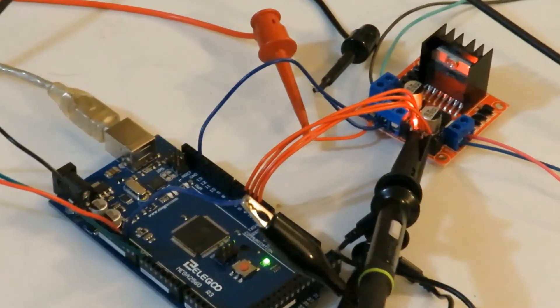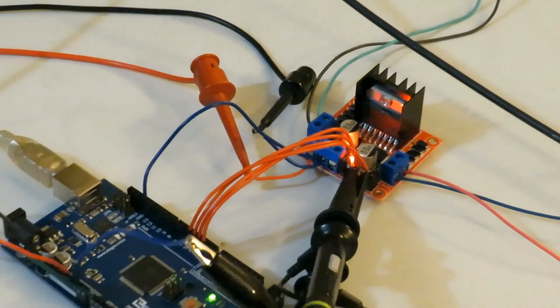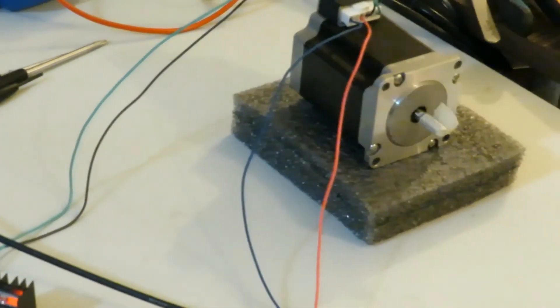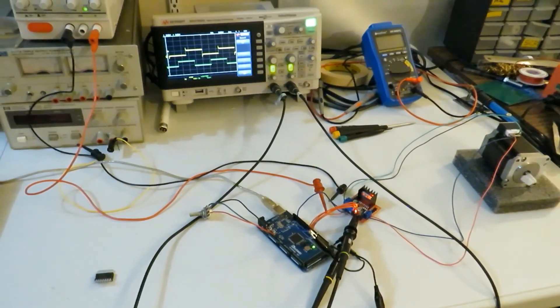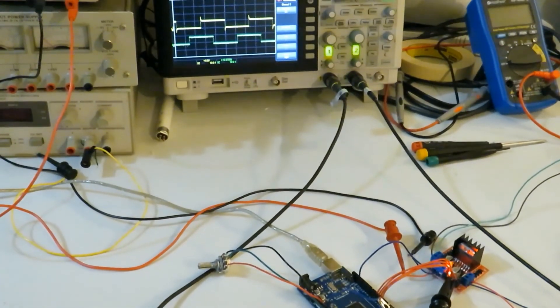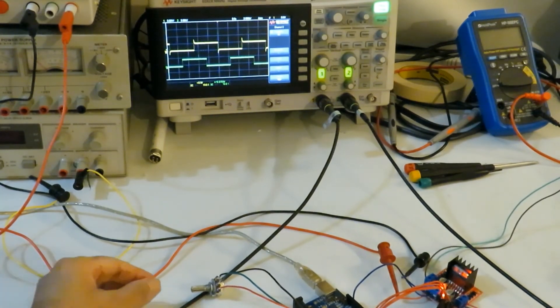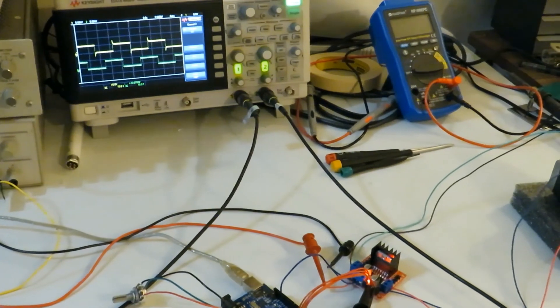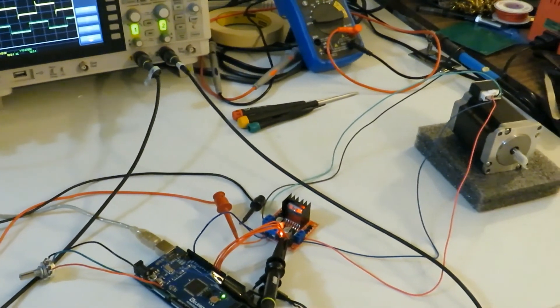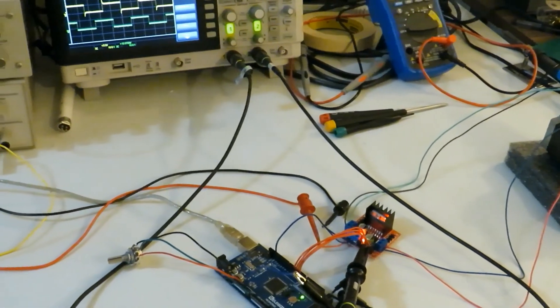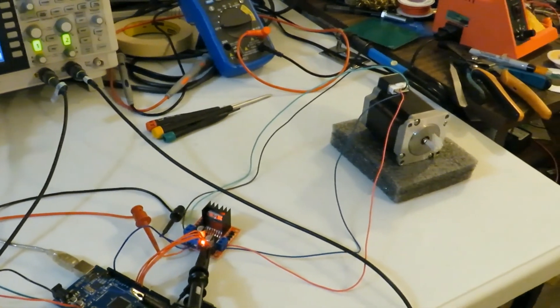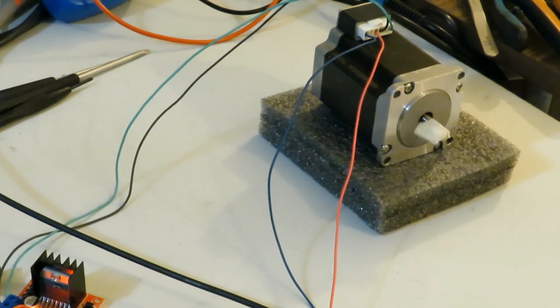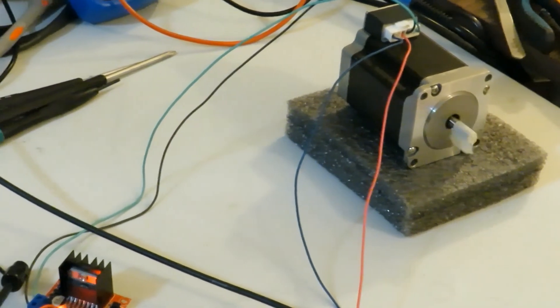Two oscilloscope probes are connected to see the pulses on the two phases. The rotational speed and you can see on the screen the frequencies going up.